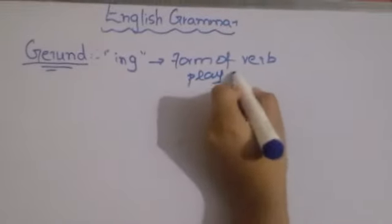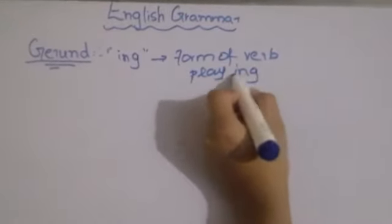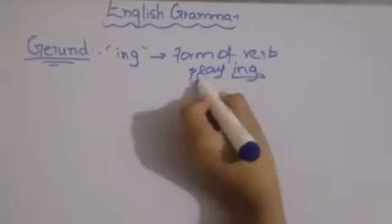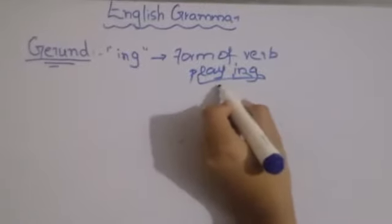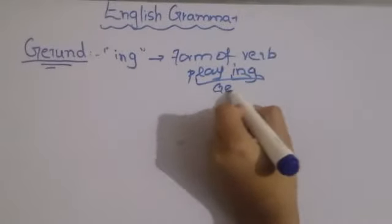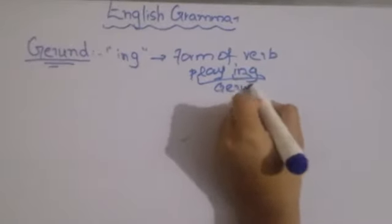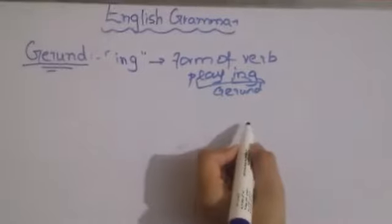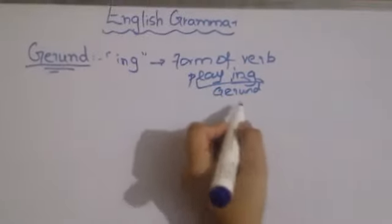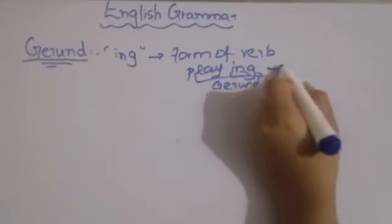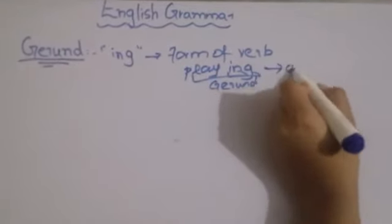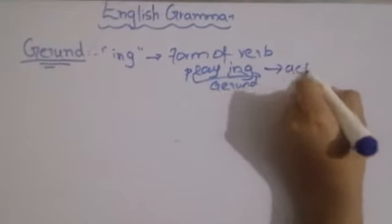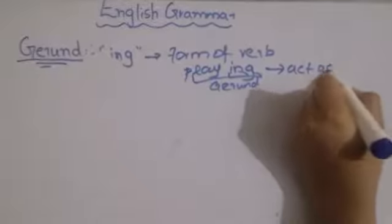If we add -ing to a verb, for example adding -ing to 'play' gives us 'playing', that is a Gerund. Gerund is used with -ing added to the first form of a verb, and it always acts as a noun.